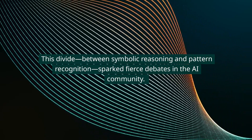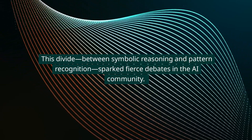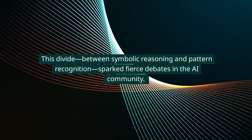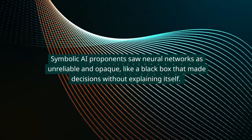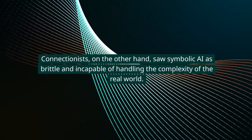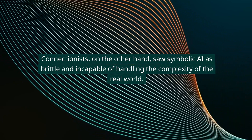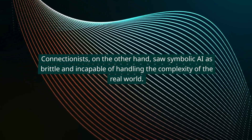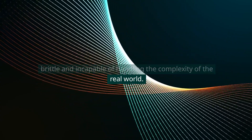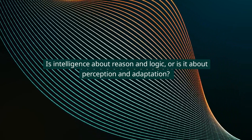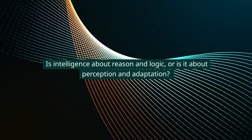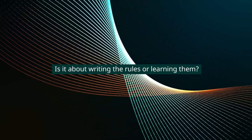This divide between symbolic reasoning and pattern recognition sparked fierce debates in the AI community. Symbolic AI proponents saw neural networks as unreliable and opaque — like a black box that made decisions without explaining itself. Connectionists, on the other hand, saw symbolic AI as brittle and incapable of handling the complexity of the real world. In many ways, the debates weren't just about AI — they were about how humanity sees intelligence itself. Is intelligence about reason and logic? Or is it about perception and adaptation? Is it about writing the rules or learning them?